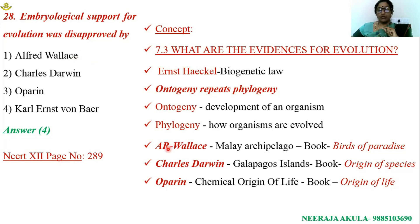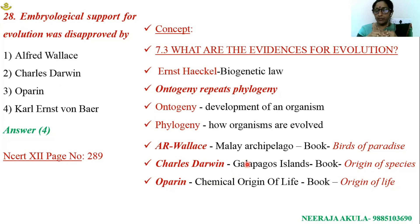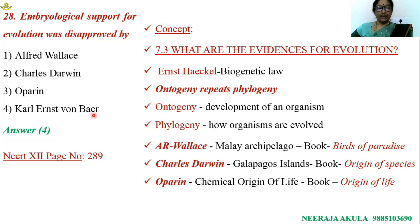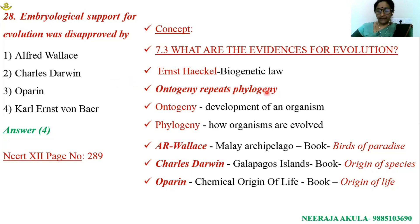Alfred Russel Wallace was a contemporary of Darwin and worked on the Malay Archipelago of Indonesia, publishing a book known as Bursts of Paradise. Charles Darwin proposed natural selection and descent with modification. Oparin proposed a hypothesis related to chemical origin of life and published the book Origin of Life. Karl Ernst von Baer is considered the founder of modern embryology. Ernst Haeckel, a German zoologist, naturalist, physician, and marine biologist, proposed the biogenetic law.